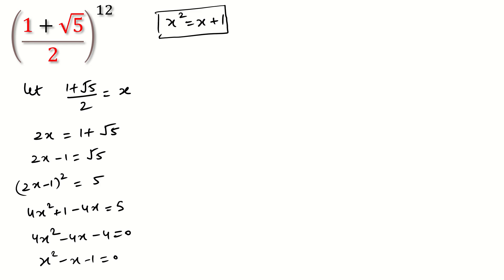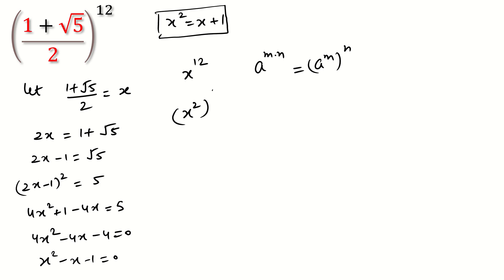We have ((1 + √5)/2)^12, which we write as x^12. Using the power rule — a^(m·n) = (a^m)^n — we write this as (x²)^6. Since x² = x + 1, we substitute to get (x + 1)^6.